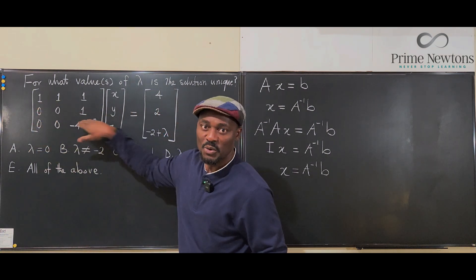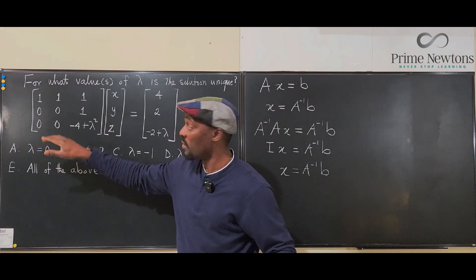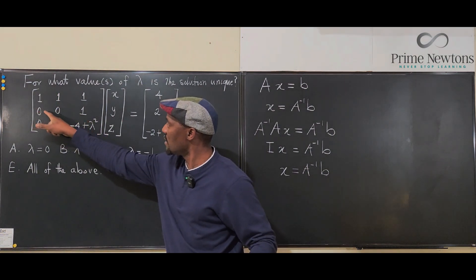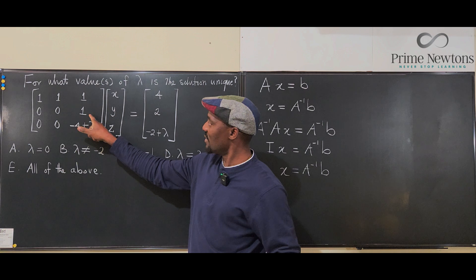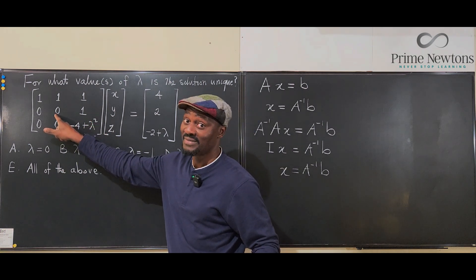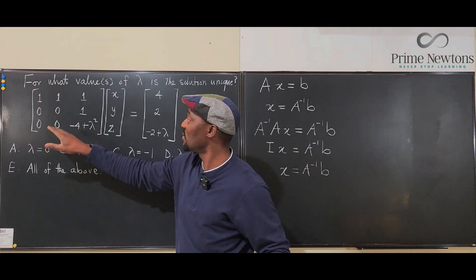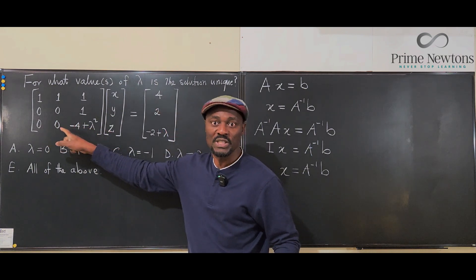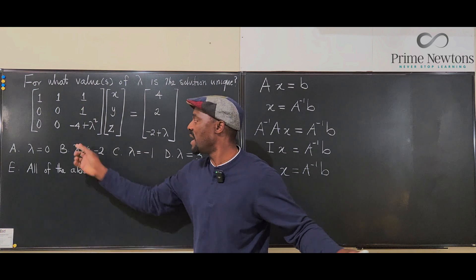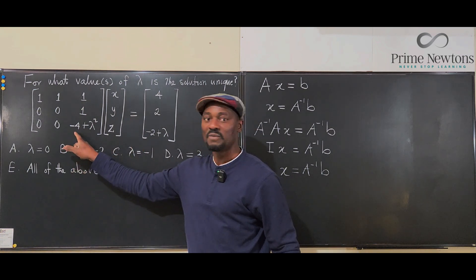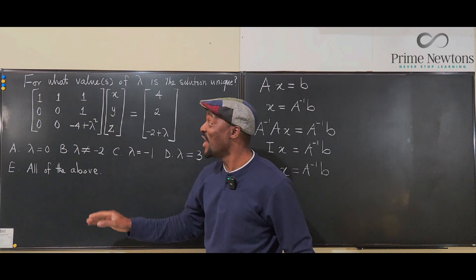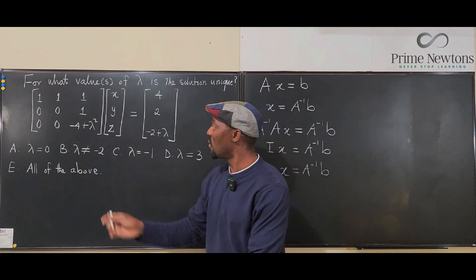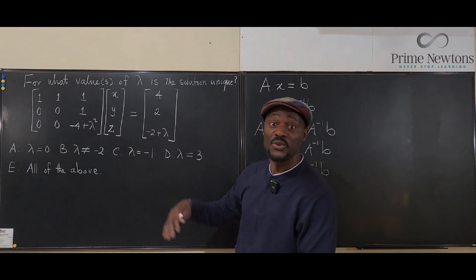If you do the reduced row echelon form of this matrix, there's a pivot here but no pivot for the second row — we've skipped one, and that is a problem. This matrix is not invertible because the rows are not linearly independent. In fact, you can make the bottom row all zeros. Once you have a row of zeros, the determinant of this matrix is going to be zero, and the matrix is not invertible.